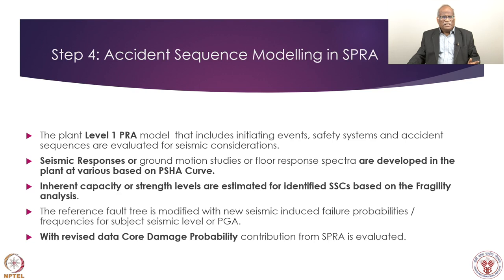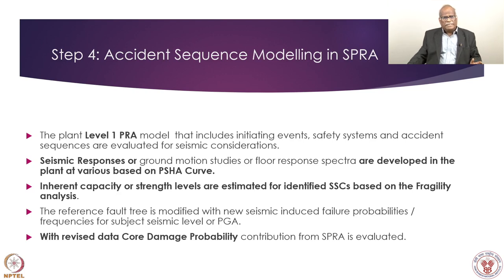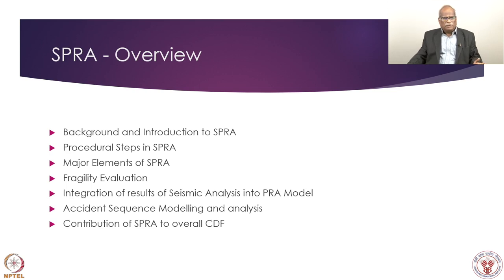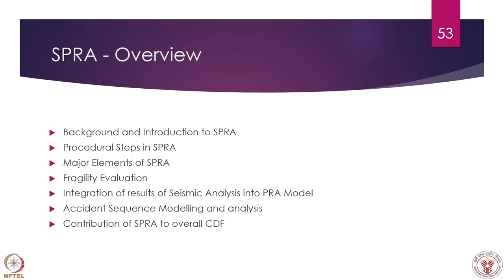Step 4 is accident sequence modeling. Once components affected by seismic events are identified through fragility analysis — either failed or degraded — those inputs are used in normal fault tree and event tree analysis. With the revised fault tree or event tree, the whole system can be propagated and we can estimate the core damage frequency. This concludes the overview covering introduction, procedural steps, major elements of SPRA, fragility evaluation, integration of results into the PRA model, and estimation of core damage frequency. This concludes the lecture on seismic probabilistic risk assessment.